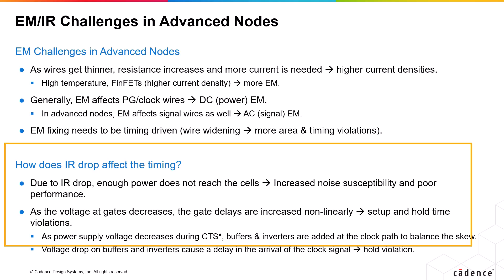What does IR drop impact? Due to this voltage drop, the intended power is not reaching the cells. That leads to increased noise susceptibility and poor performance of the circuit. How does IR drop impact timing? As the intended voltage doesn't reach the device gate nodes, the gate delays are increased non-linearly, ultimately leading to setup and hold time violations.